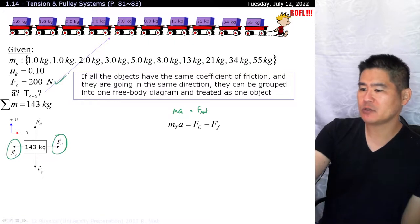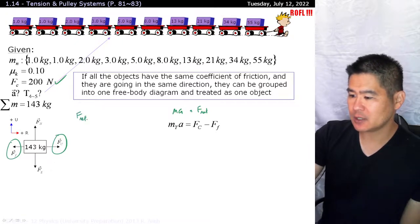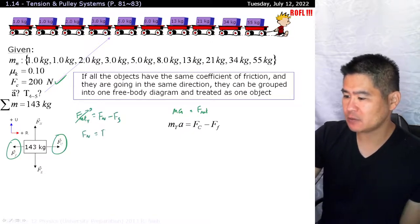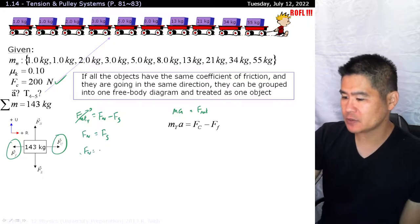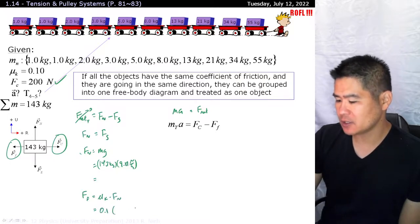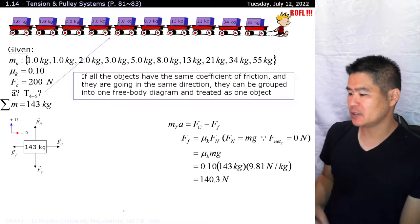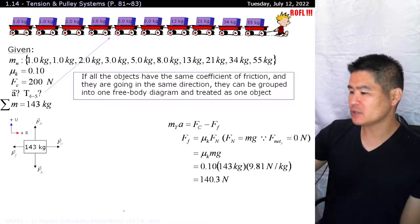We know that F net is equal to MA. And F net is equal to all the positive forces, subtract all the negative forces. So the force of Calvin being at 200 newtons, subtract the force of friction. We know that F net in the y dimension will go to zero, which is equal to Fn minus Fg. So our Fn is equal to Fg, which is 143 kilograms times 9.81 newtons per kilogram, which will give us an answer where we can sub it into our force of friction.